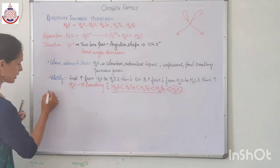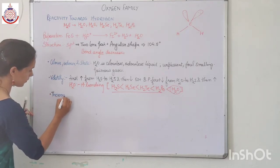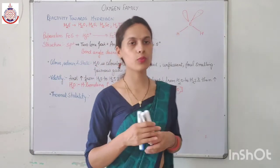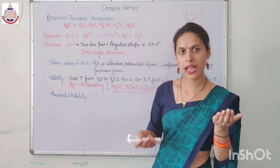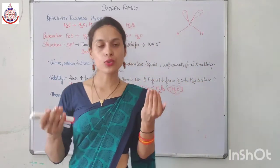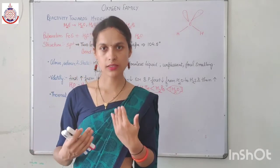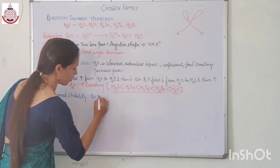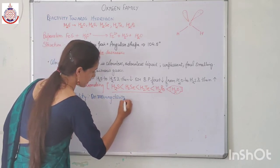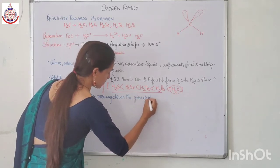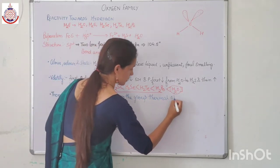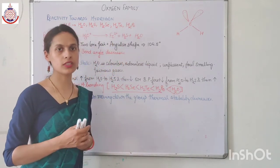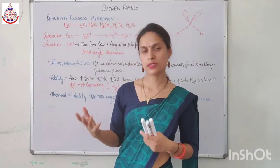Next we will talk about thermal stability. As we move down the group, the distance between hydrogen and the central atom increases. Due to this increase in distance, bond strength decreases. And due to the decrease in bond strength, thermal stability decreases. So on moving down the group, thermal stability decreases due to the increase in bond length and decrease in bond strength.